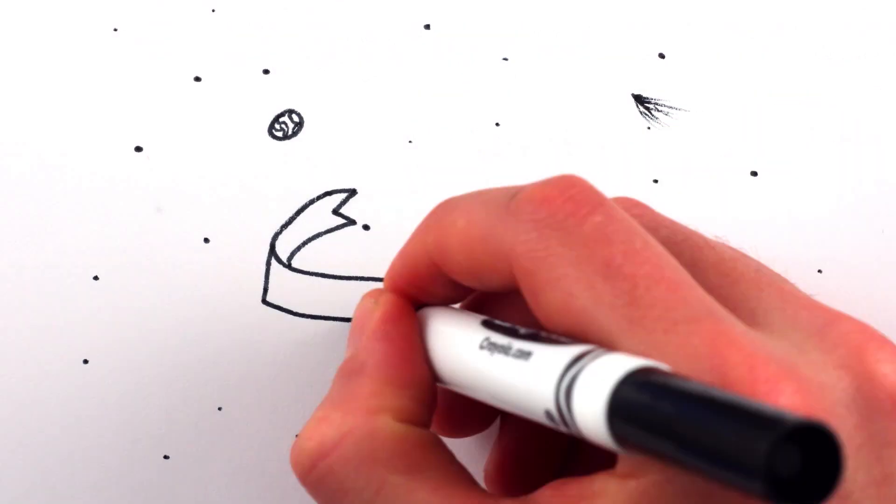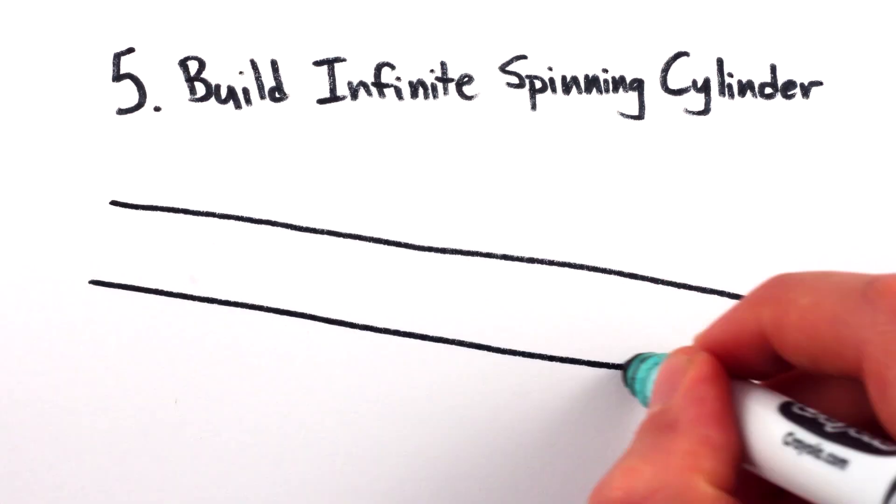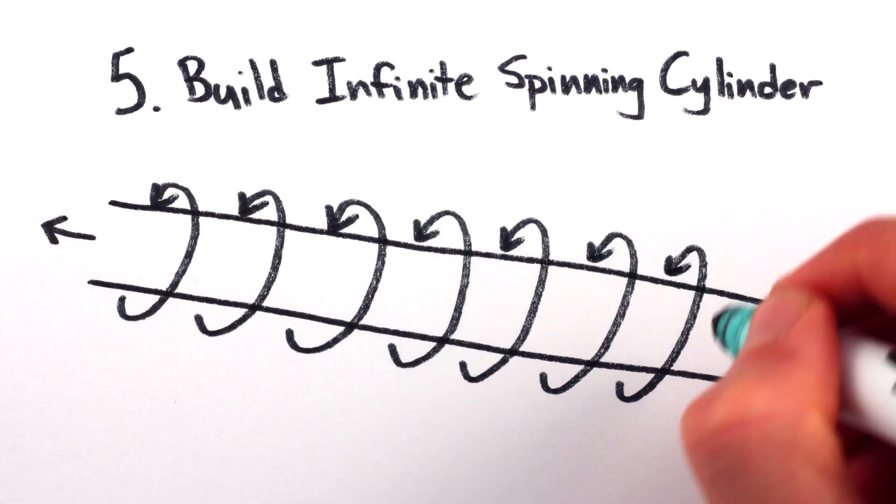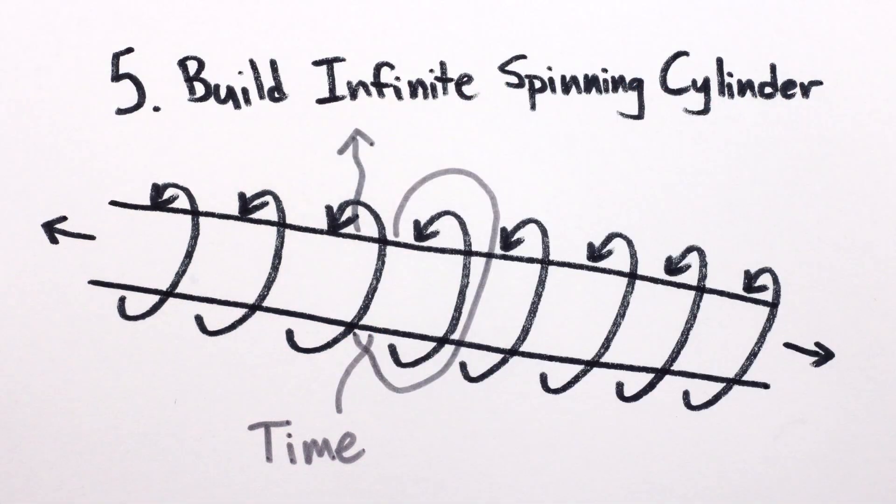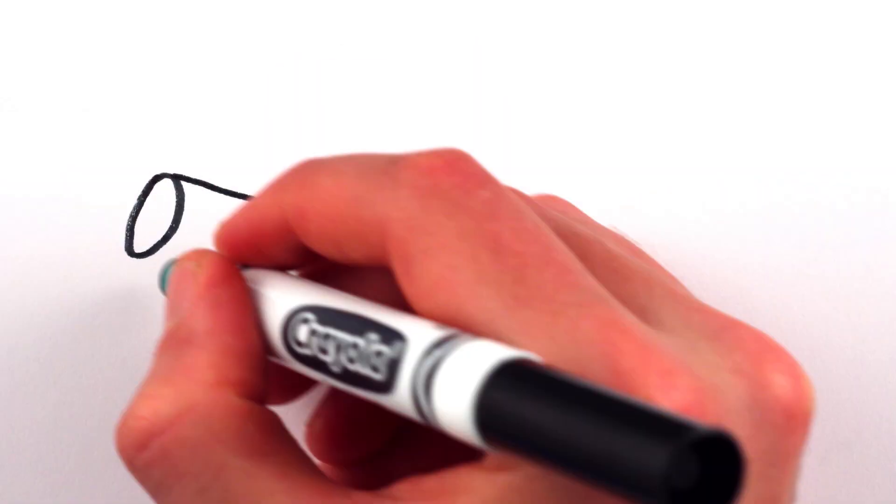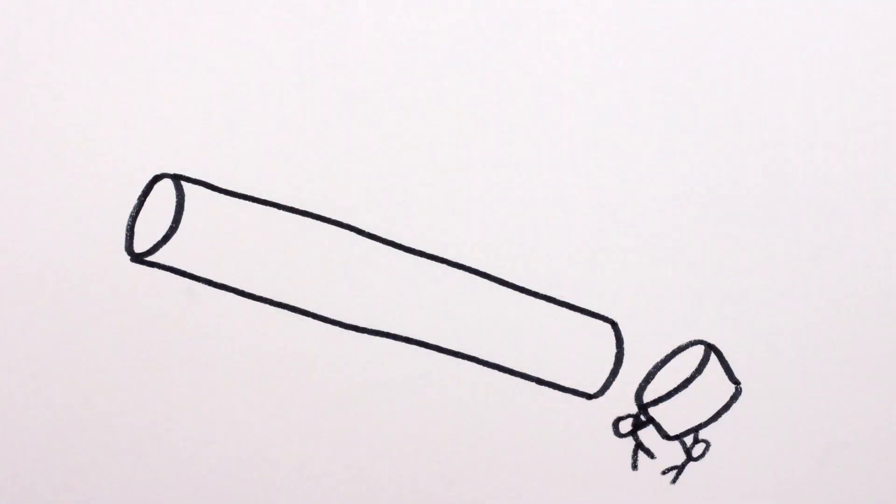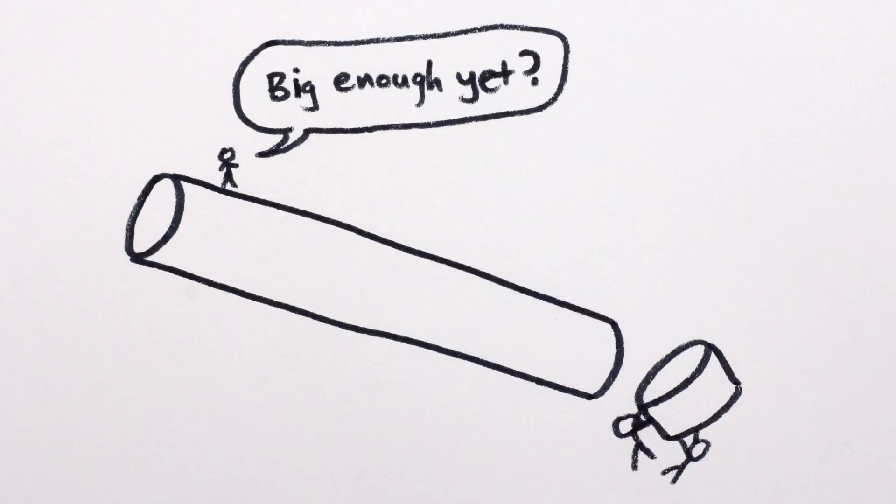Unfortunately, our universe isn't spinning. Maybe it would be easier to build an infinitely long super dense spinning cylinder, which would also curve spacetime enough to create a time loop. The problem, of course, is how do you build something that's infinite in size? Maybe you could just make it really, really big?